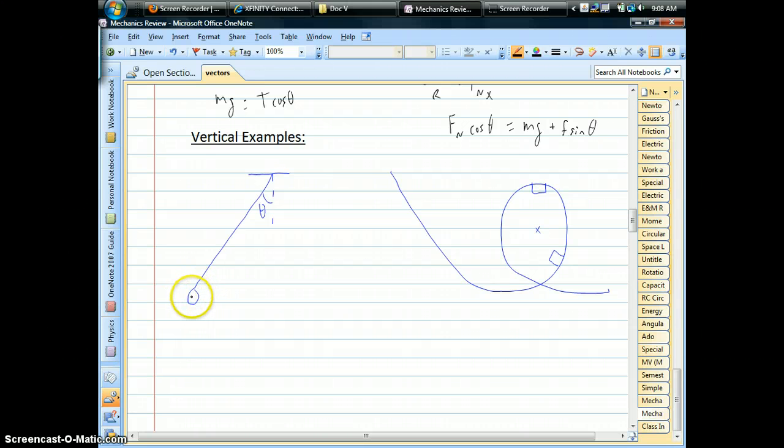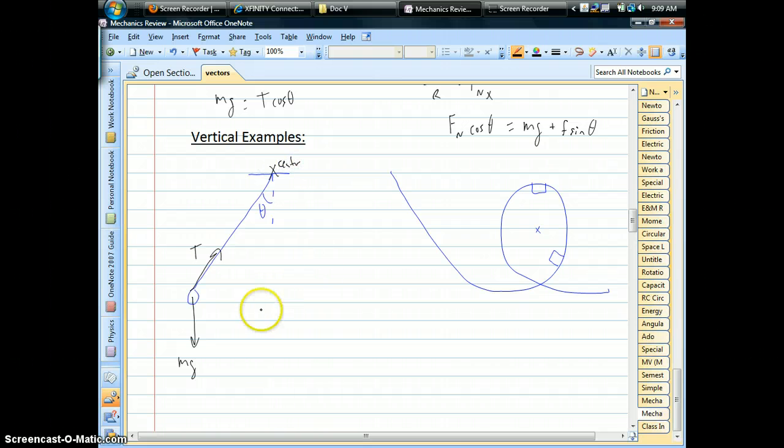For the pendulum, we have a force diagram that looks identical to the swing ride that we just did. But the difference is where the center of the circle is. The center is up here, at the top of the string. So we write centripetal force. Notice we don't have a component of tension pointing that way. It's the total tension. No matter what the angle is, as you swing, whatever your tension is, is pointing that way.